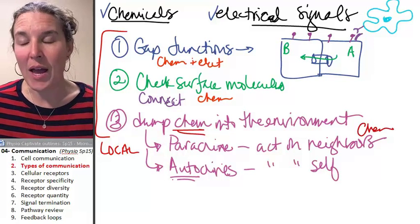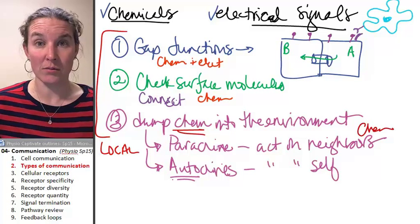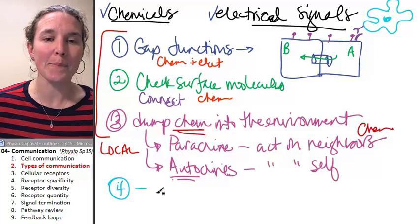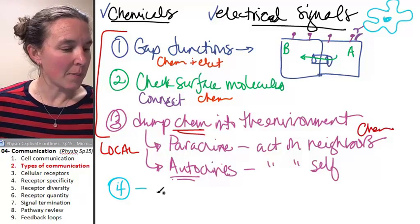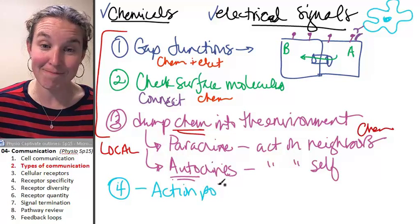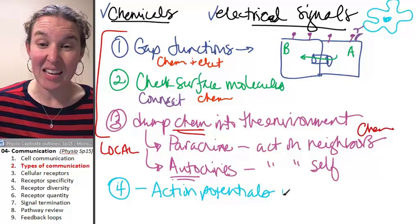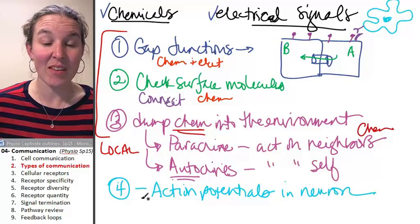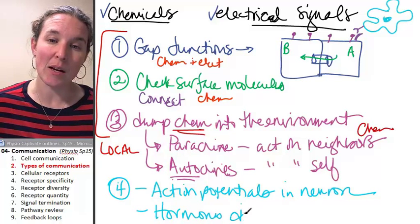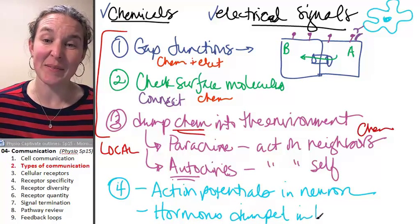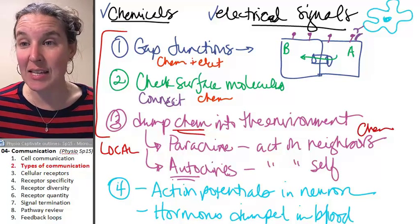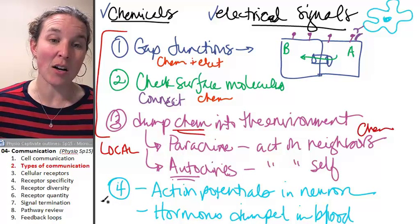Of course, we actually have messages that have to travel long distances, and those messages happen via action potentials in the neuron or via hormones dumped in the blood. The point is that these strategies are long distance.